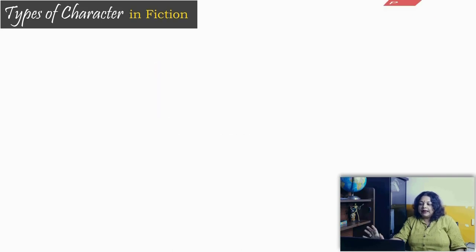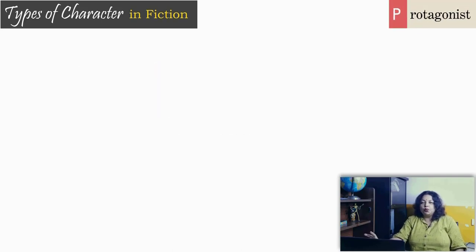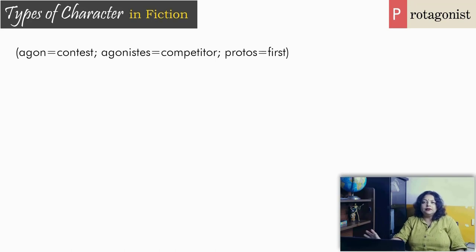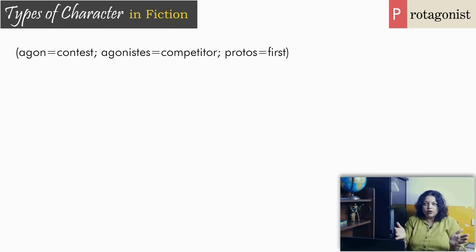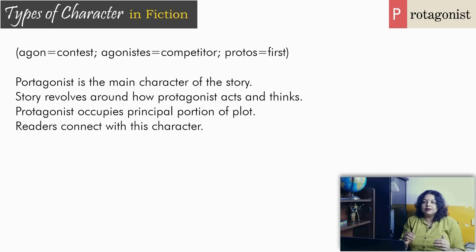First we will look at protagonists — what they are and why they are called so. The word protagonist is linked to the word agon. Back in the classical age, tournaments and competitions were called agon — it was the war field of the competitors. The principal person, the champion who faced the challenges of that agon, was called the protagonist. Therefore, the word protagonist in fiction means the character who acts as the focus of the story, or who is the main character.